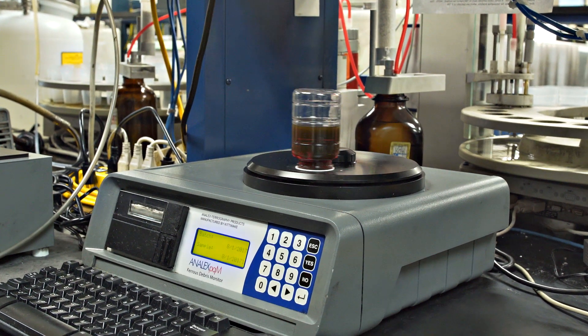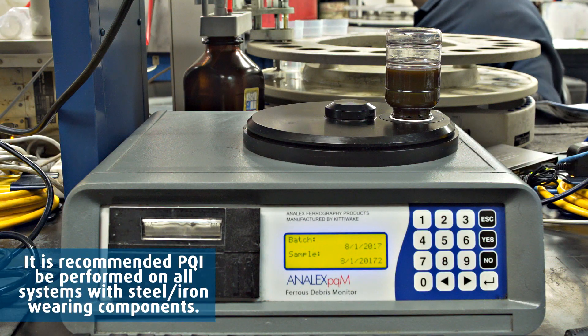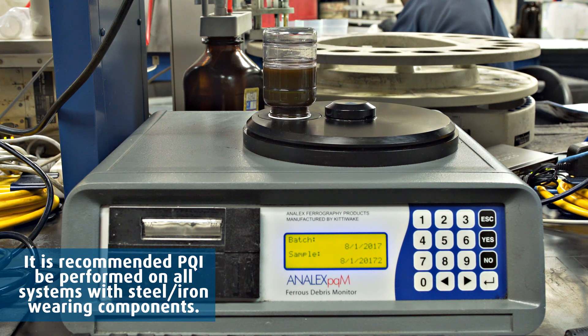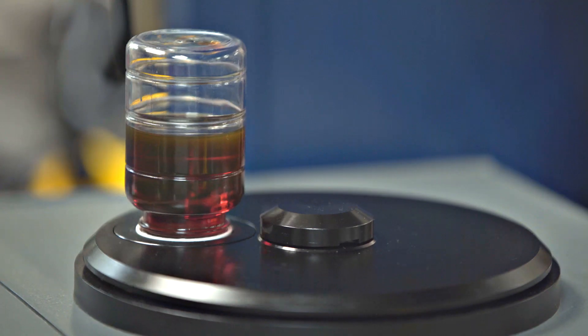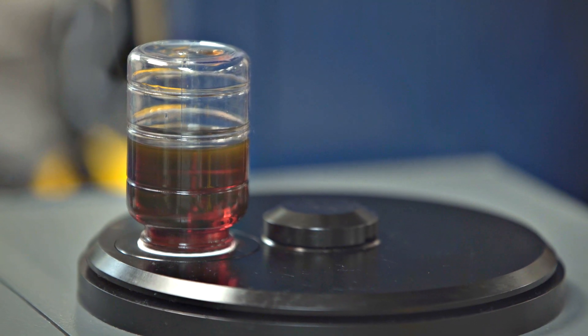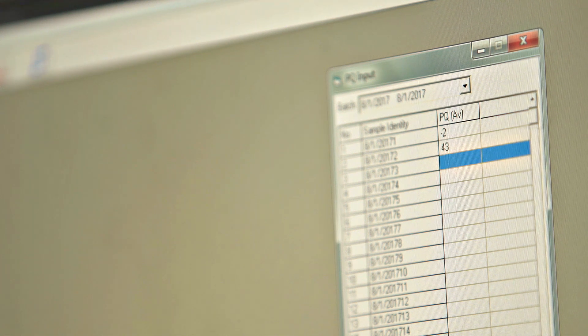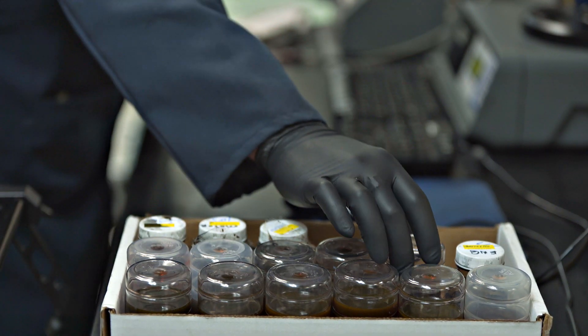When PQI is lower than the parts per million in iron from the elemental analysis, chances are there are no particles larger than 10 microns. If the PQI increases dramatically while the parts per million in iron remains consistent, or decreases, larger ferrous particles are being generated.